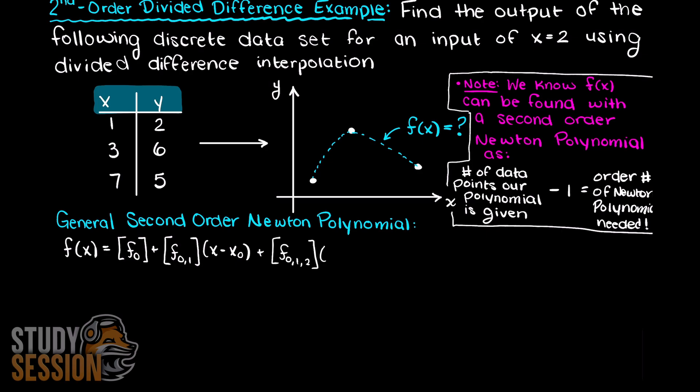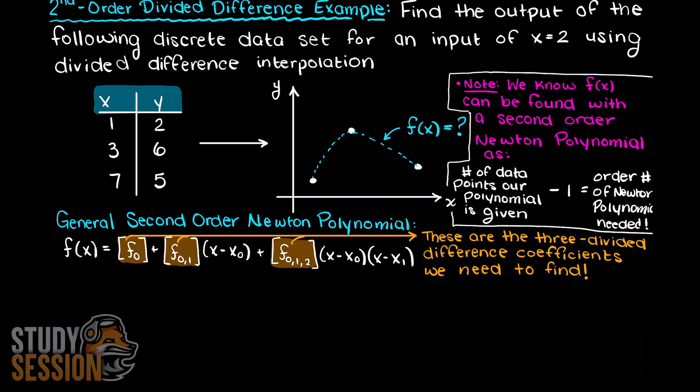A second order Newton's polynomial has the following general equation. As you can see here we are only missing these coefficients, these are called our divided differences, hence the name of the algorithm. But how do we find these coefficients for our Newton polynomial? Well that is the magic of this method, we can simply use our divided difference tables.